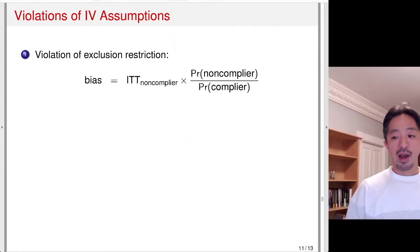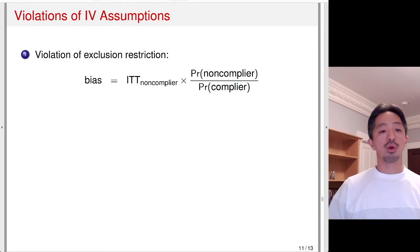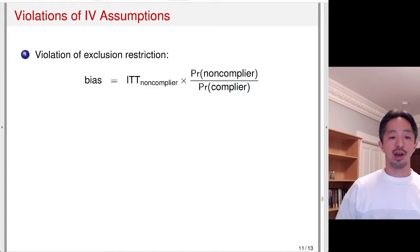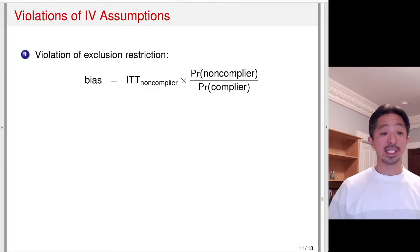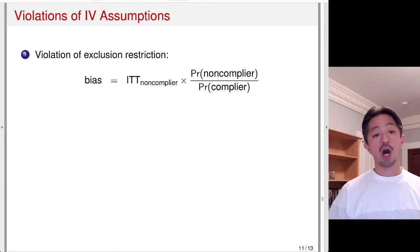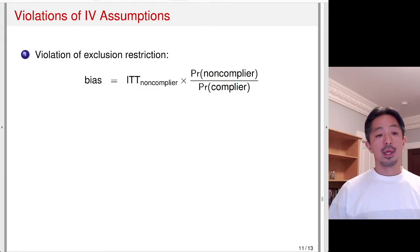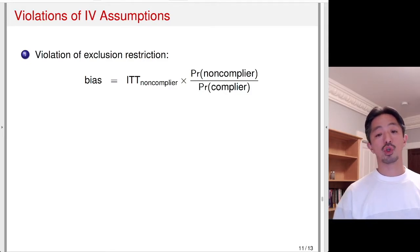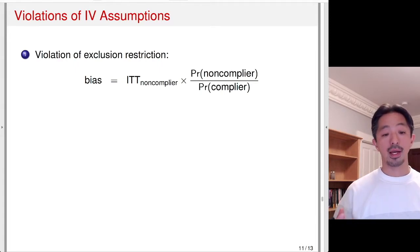Now let's think about violations of IV assumptions. If the exclusion restriction is violated, you can derive the bias of the IV estimator. The bias is a function of two things: how large the ITT effect for non-compliers is — recall the exclusion restriction says this ITT effect for non-compliers is zero — and that quantity multiplied by the relative proportion of non-compliers. The larger the proportion of non-compliers, the larger the bias; and the larger the ITT effect for non-compliers, the larger the bias.